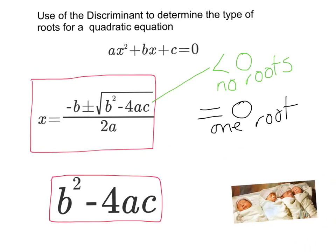And what about when it is greater than zero? This bit, when it's greater than zero, then that means we can take the square root and we can have the positive and negative versions of it. So we'll end up with two roots.